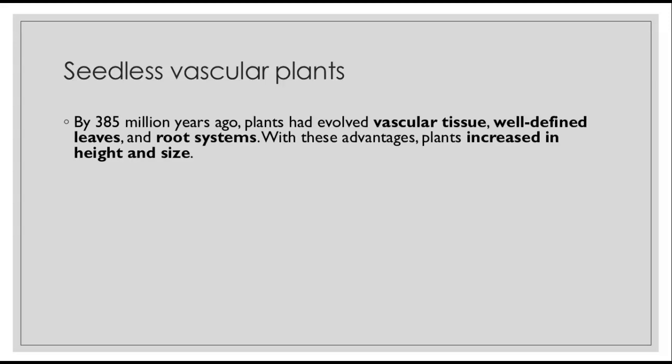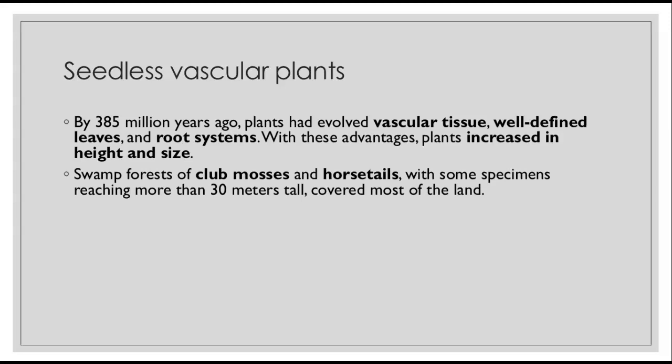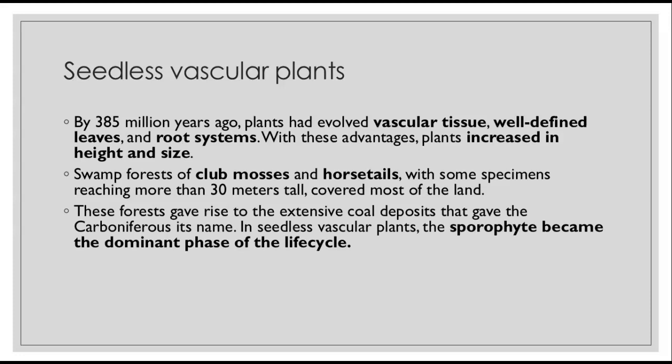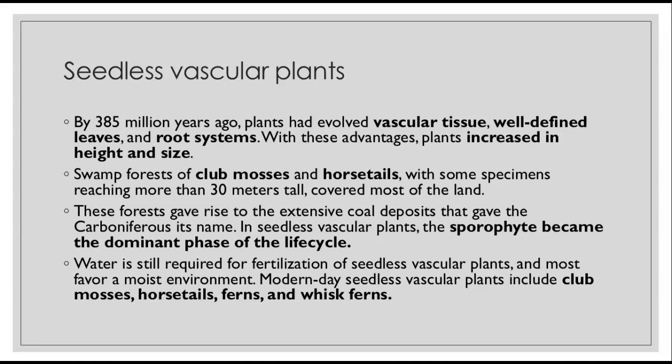By 385 million years ago, plants had evolved vascular tissue — compared to 490 million years ago for the first land plants. With vascular tissue, well-defined leaves, and root systems, plants increased in height and size and dominated the landscape. Swamp forests of club mosses and horsetails, some reaching more than 30 meters tall, covered most of the land. These forests gave rise to the extensive coal deposits that gave the Carboniferous Era its name. In seedless vascular plants, the sporophyte — the diploid stage — becomes the dominant phase of the life cycle. Water is still required for fertilization, and most favor a moist environment. Modern-day seedless vascular plants include club mosses, horsetails, ferns, and whisk ferns.